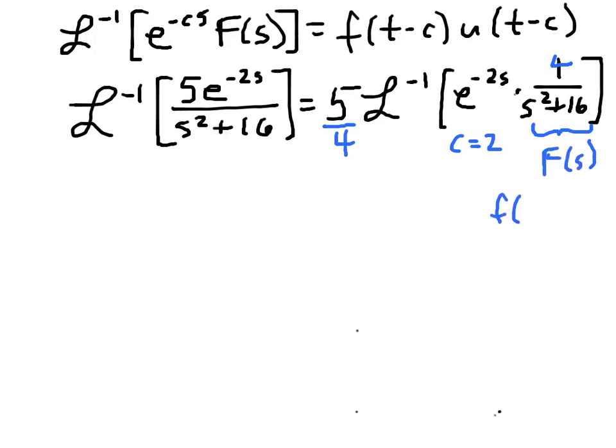And so f of t, little f of t in this case, is going to equal sine of omega t or sine of 4t. So we know our little f of t, we know our c, we've got that constant of 5 fourths out in front.